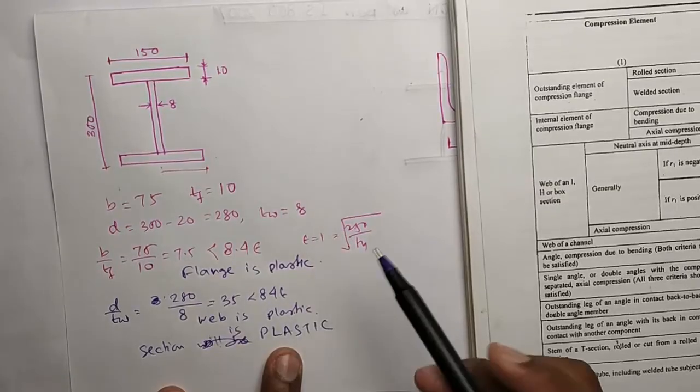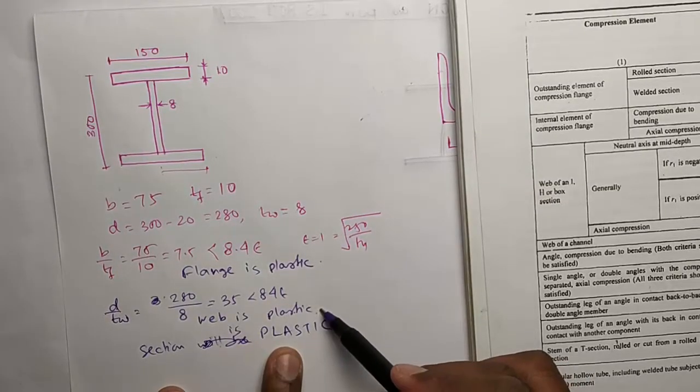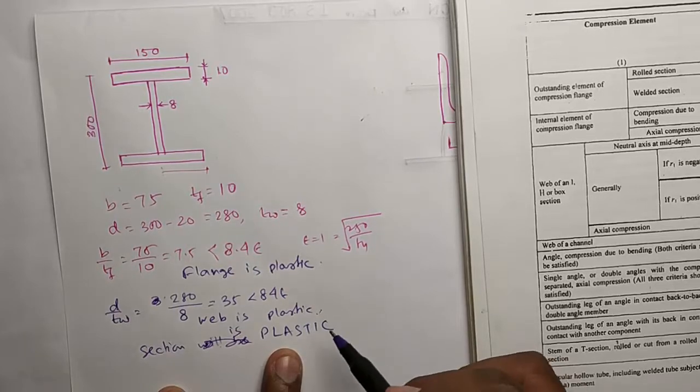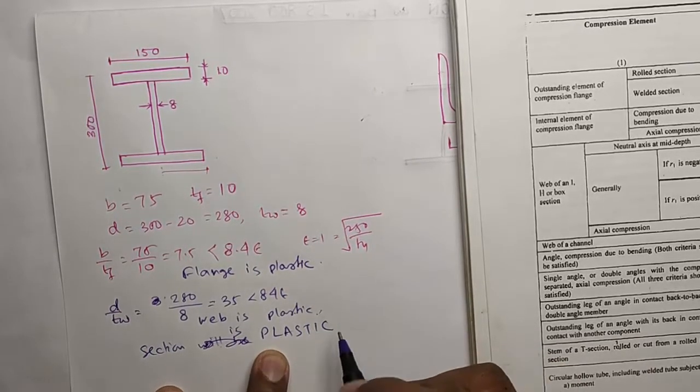If both the sections are plastic, so the section will be plastic. If one flange is plastic and the web is compact, then the section will be compact. So the most critical class will govern the section classification.